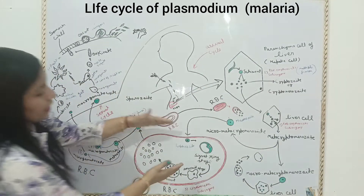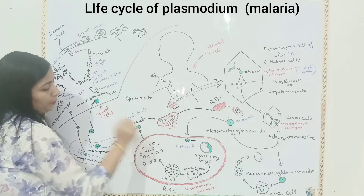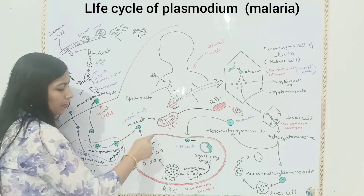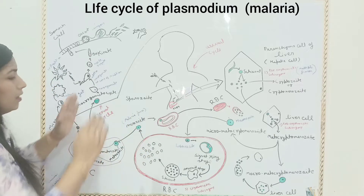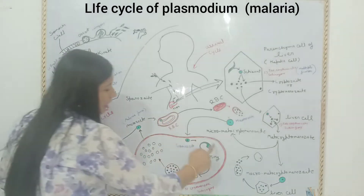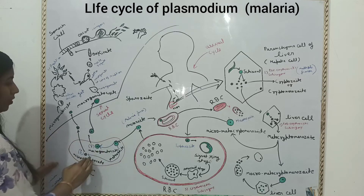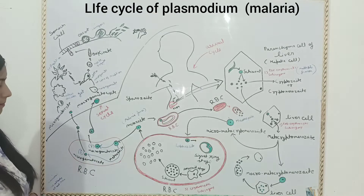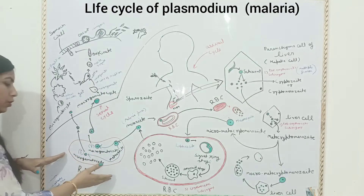When merozoites increase in number in red blood cells, they create pressure on the wall of the RBC and the wall of the RBC is ruptured. When the wall of the RBC is ruptured, the merozoites enter into the blood. Some merozoites attack RBCs again and again, repeating this cycle. Some merozoites enter into the RBC and form Macrogametocyte and Microgametocyte.